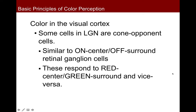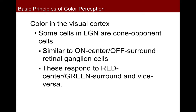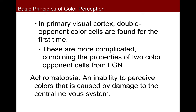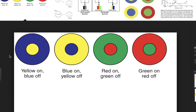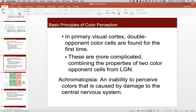In LGN, we have center-surround opponent cells. The receptive fields of these color opponent cells look like: yellow on in the center and blue off in the surround; blue on, yellow off; red on, green off; green on, red off. So in LGN, cells are responding to the presence of red or green.